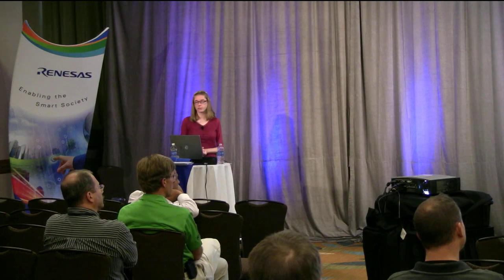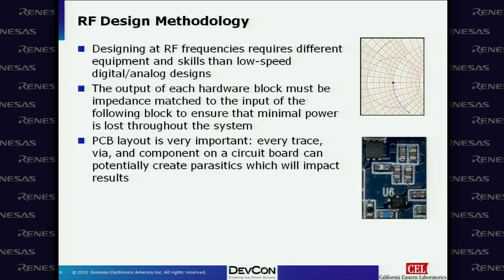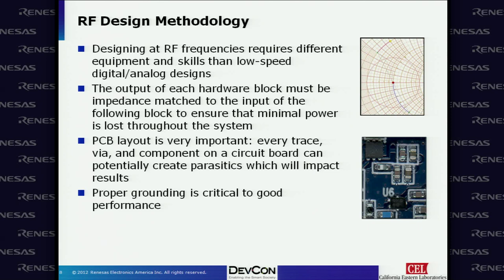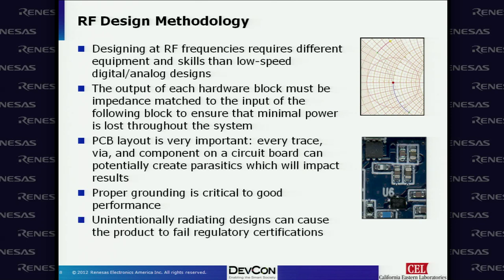PCB layout is very important. Every trace, via, and component on a circuit board can potentially create parasitics which will impact your results. A long trace running near a switching power supply could create a radiator and cause regulatory issues. Proper grounding is critical to good performance — in RF, a solid ground plane is generally a requirement. Unintentionally radiating designs can cause products to fail regulatory certifications, so address this early in development to avoid surprises.